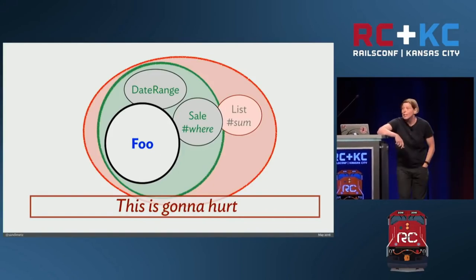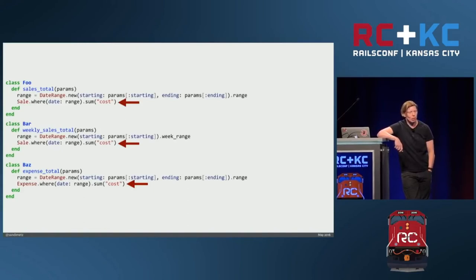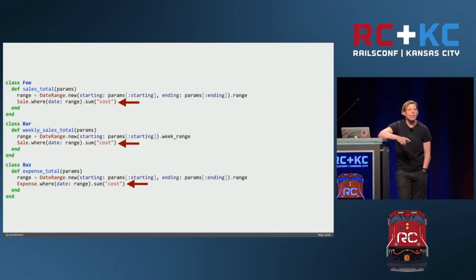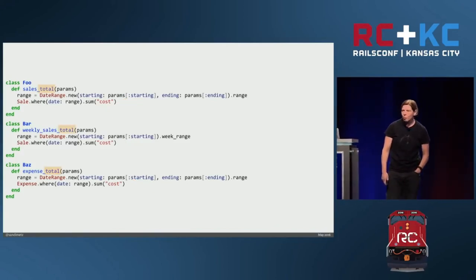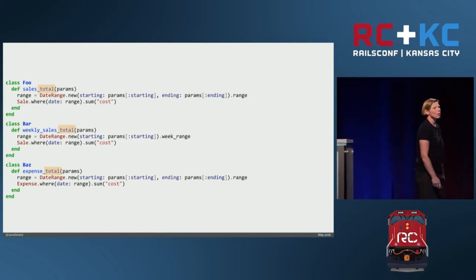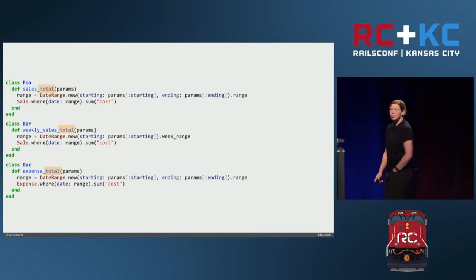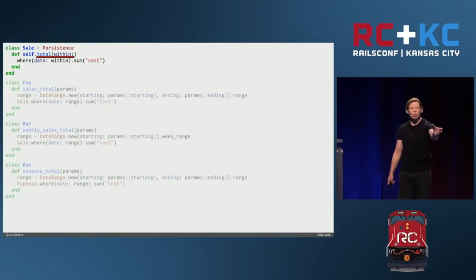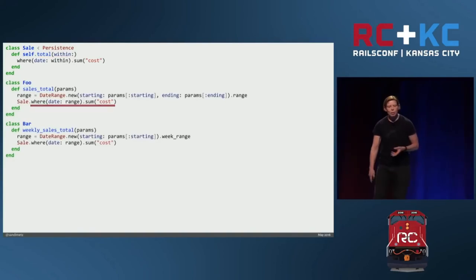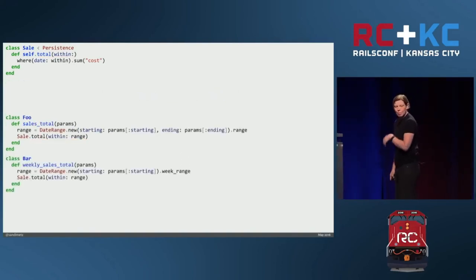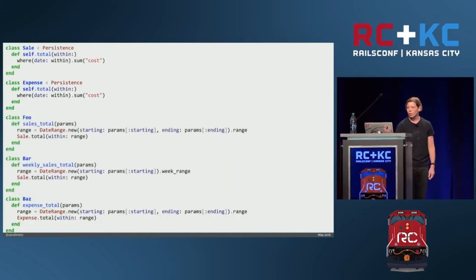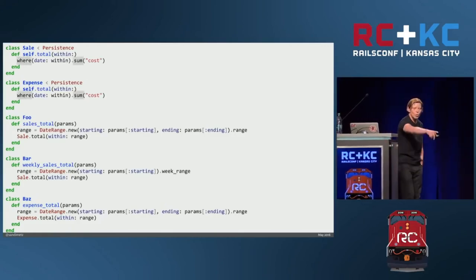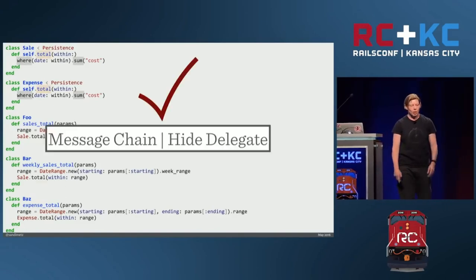I want to fix the message chain — it's really easy. The problem is there's a concept that doesn't have a name. Often when you see this there's a method name with a repeating prefix or suffix, and when you see that you almost inevitably have an object trying to get out. What this means is I can hide the delegate by putting a total method on Sale. I'm going to write my own method, put it on that class, and then change this to send 'total.' It will happen on expense too. Once I'm done, I end up with this code — there's no Law of Demeter violation, no message chain. We've hidden the delegate.